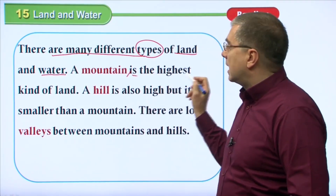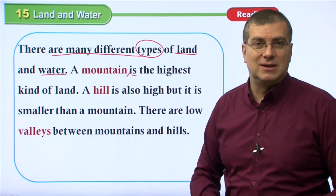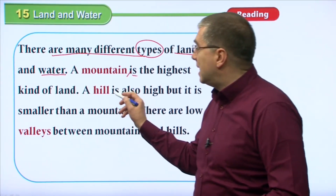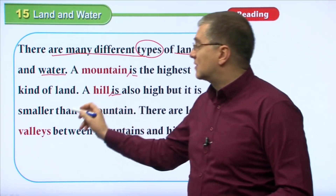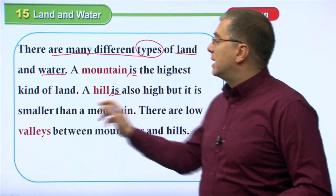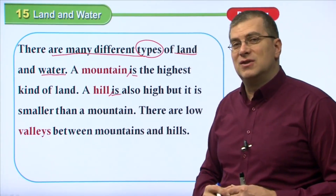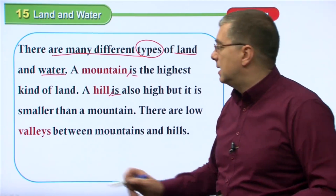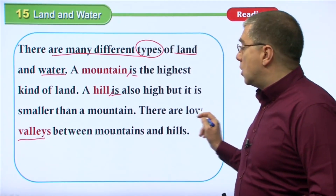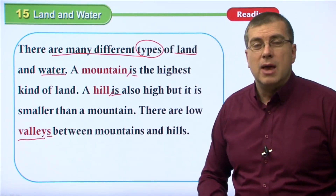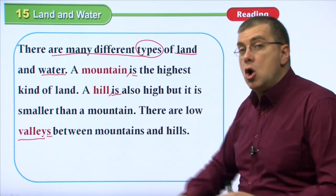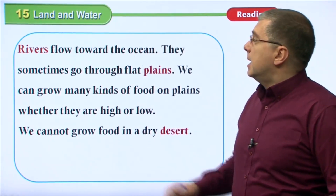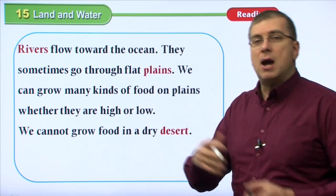Our first sentence after the topic sentence is: 'A mountain is the highest kind of land.' A simple definition sentence. Next: 'A hill is also high, but it is smaller than a mountain.' So we have two definition sentences about types of land. The third sentence also talks about land — valleys. 'There are low valleys between mountains and hills.' Then we talk about water.